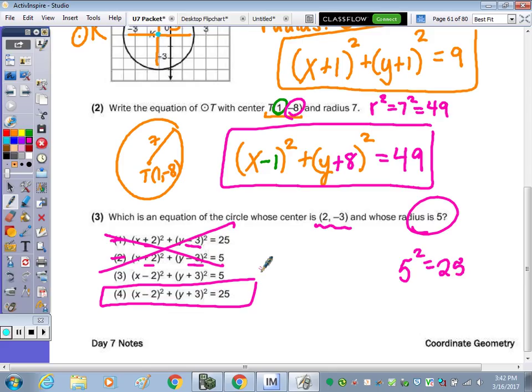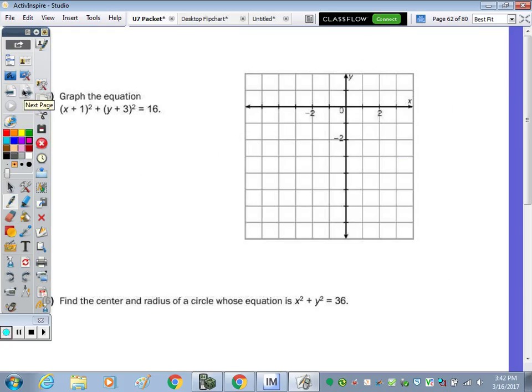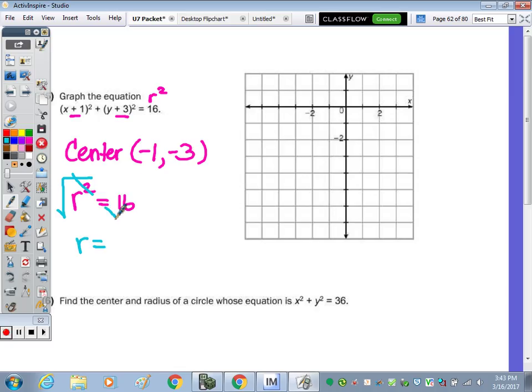Number five says to graph the equation. So when we graph, just like we write the equation, we need to know the center and the radius. So in number five, given the equation, we can look here for the center. So the center is going to be the point, if that's a positive one, negative one, positive three, negative three, and remember this is the, in the equation, r squared. So what number squared equals 16? We'll solve for r by doing the opposite of squaring, which is taking the square root to get that to cancel, and the square root of 16 is four.